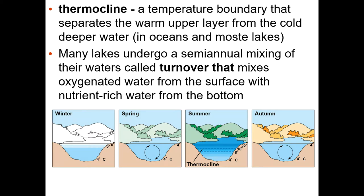Thermocline — thermo means temperature — is a boundary that separates warm water above from colder water below. In summer this stratification occurs, and then turnover happens, usually in spring and fall, when the water mixes. The warmer surface water cools and sinks, while colder, nutrient-rich water from below rises.